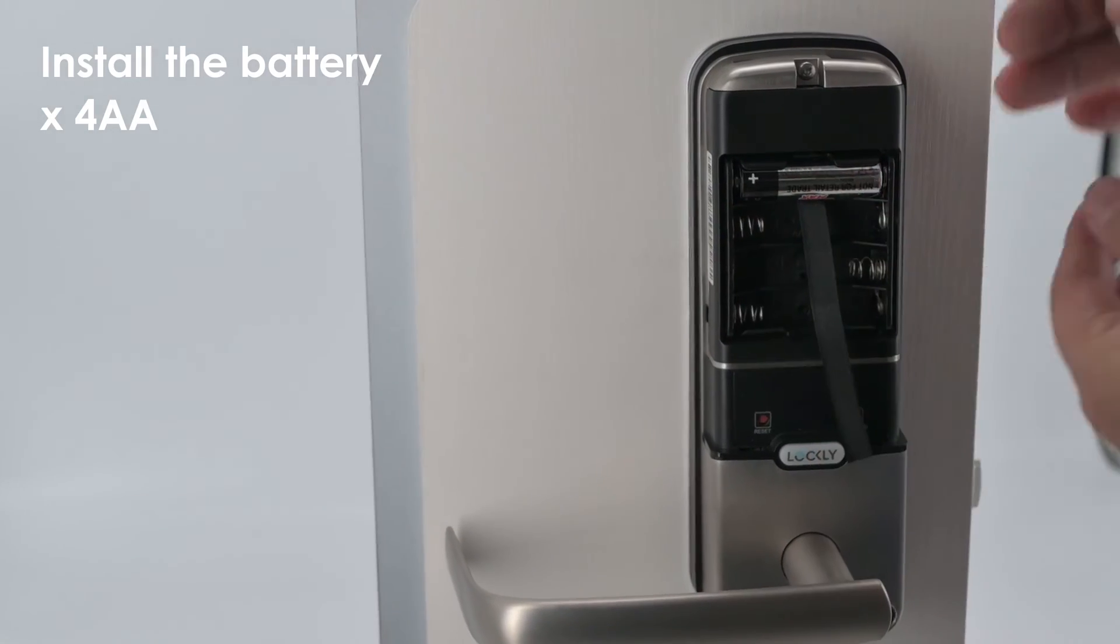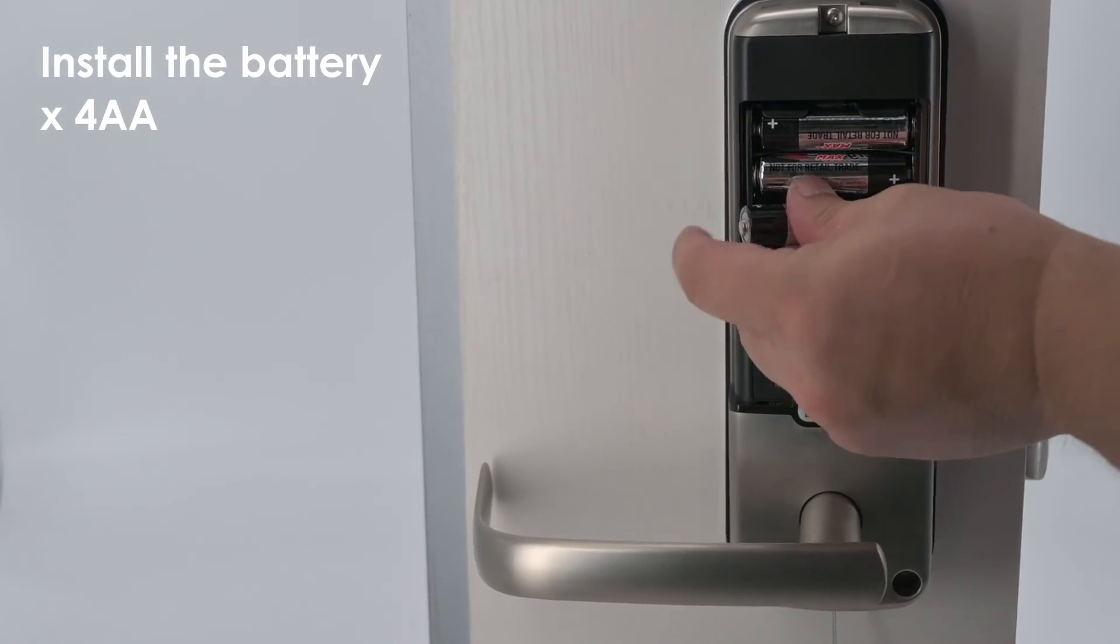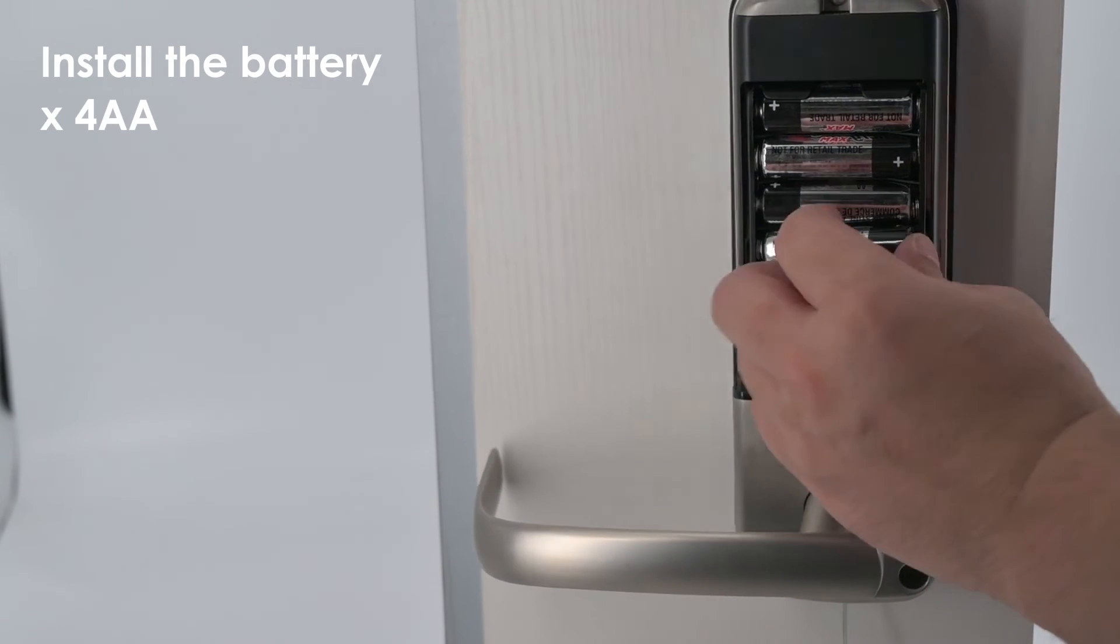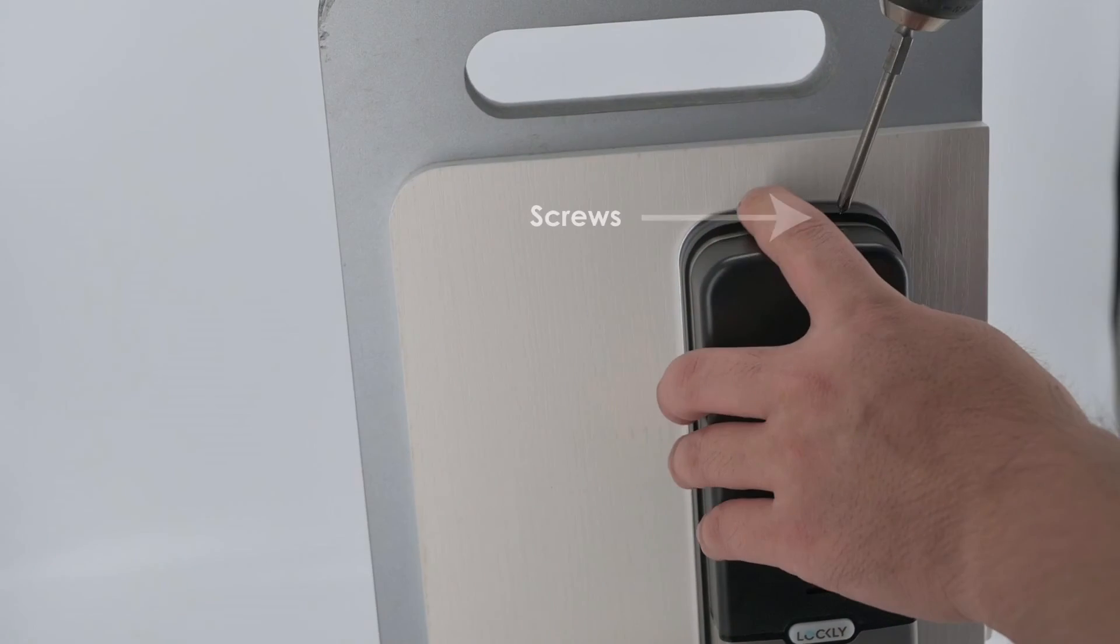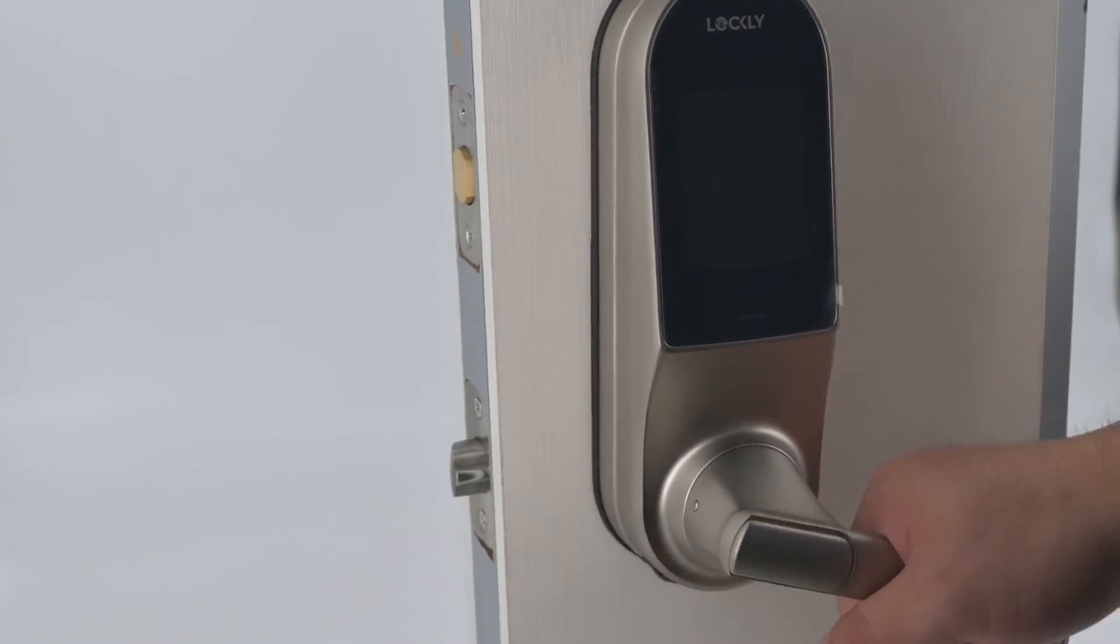Insert four AA batteries. Align the positive and negative markings on the batteries to the battery compartment. Slide the battery cover Q. Turn the screw on top clockwise until tight. The lock body is installed.